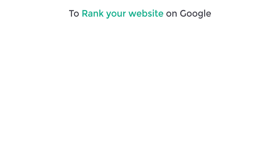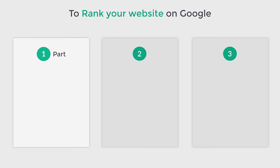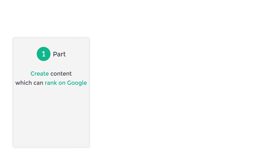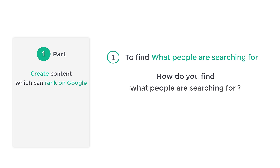So in order to rank your website on Google, we are going to do three parts. The first part is to create content which can rank on Google. To create the content, the first step is to find what people are searching for. How do you find what people are searching for?